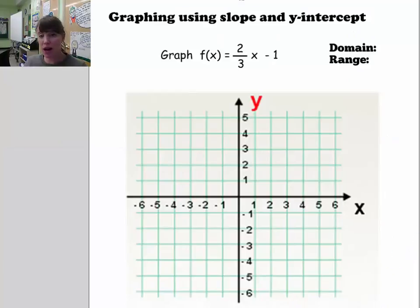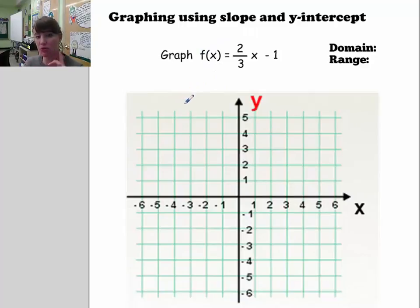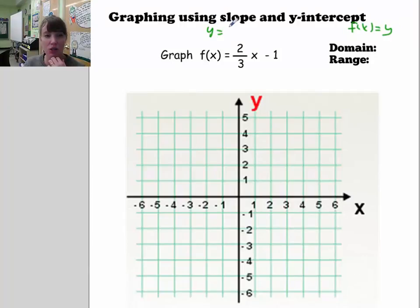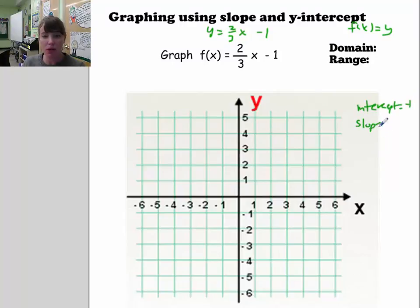It's very easy to graph when an equation is in slope-intercept form because you can easily pick off the slope and the y-intercept. We're using function notation here — remember, f(x) equals y. So f(x) = (2/3)x minus 1 is the same as y = (2/3)x minus 1. In this case, the y-intercept is negative 1 and the slope is 2/3.